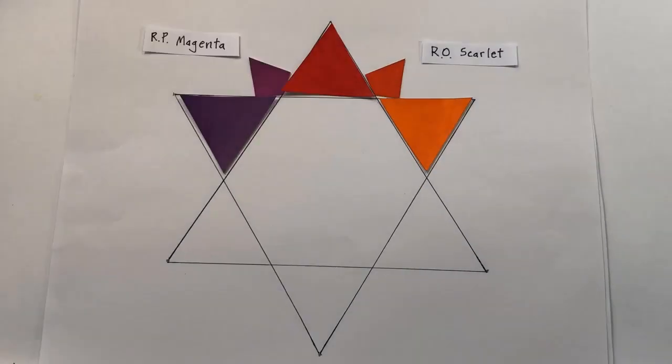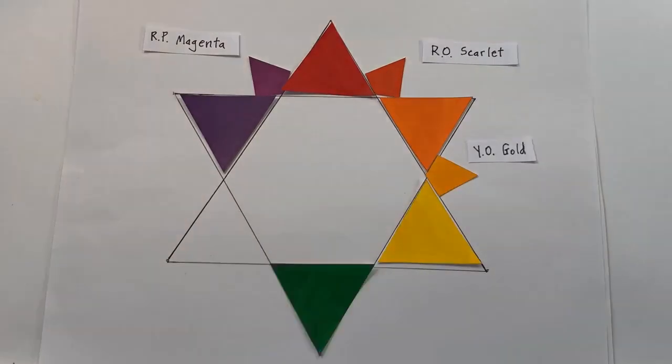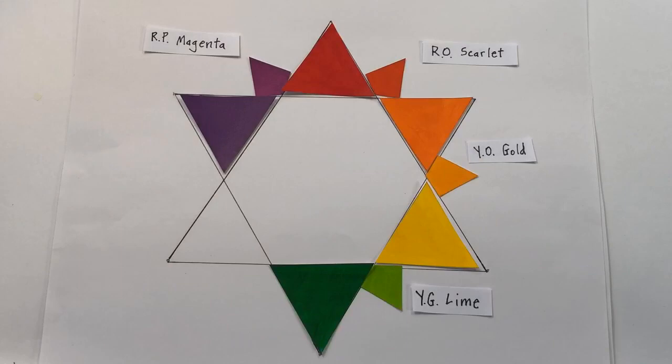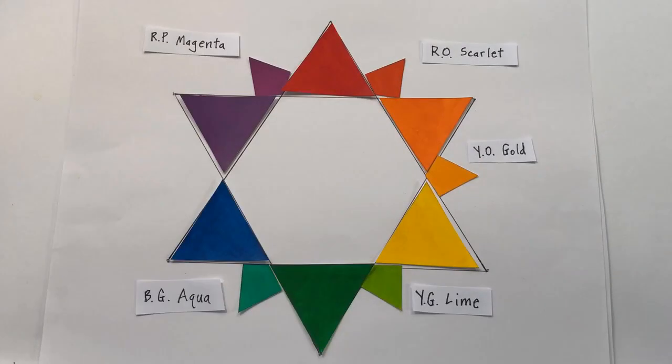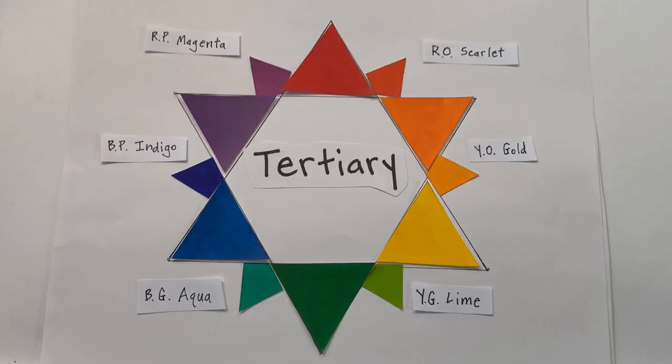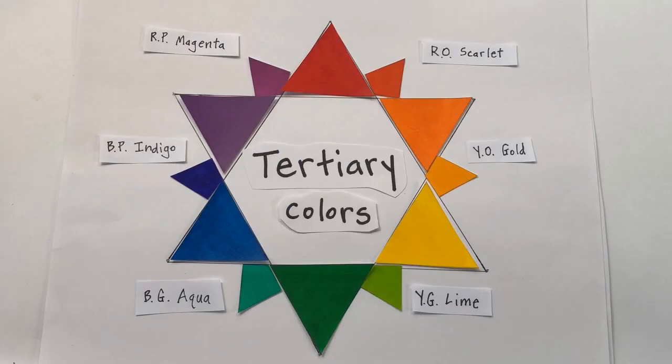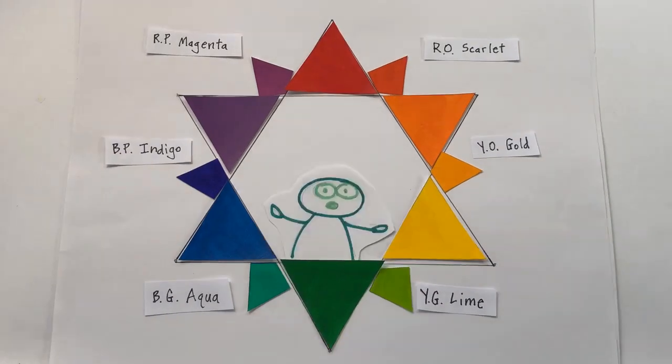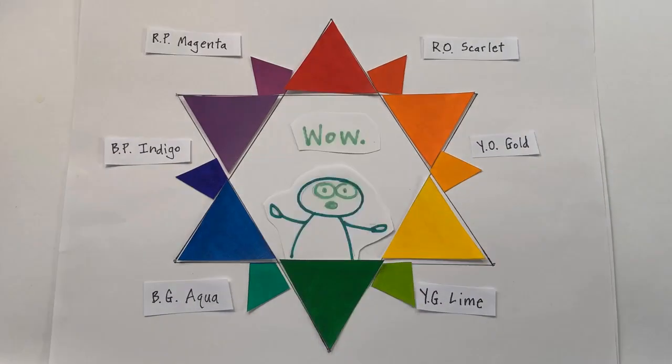Tertiary red orange, red purple, yellow orange, yellow green, blue green, blue purple are also called scarlet, gold, lime, aqua, indigo and magenta. There are six tertiary colors.